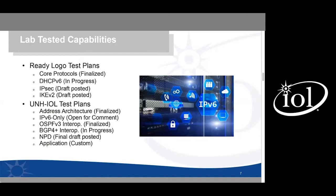Network protection products, as the USGv6 profile names them, have a final draft posted and testing will be available very soon. There is also an application test plan — a custom test plan to handle devices or products running on top of an operating system, or applications that need to handle IPv6 addresses or DNS but may not implement a full protocol stack. We expect to make somewhat customized tests and test plans to handle the unique differences between many different types of applications.